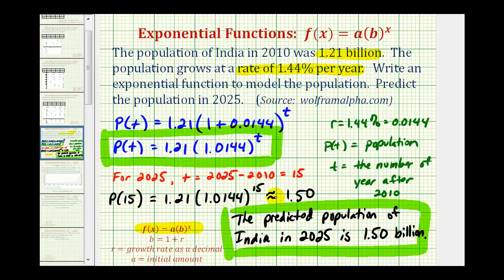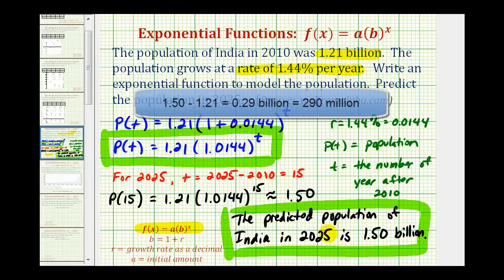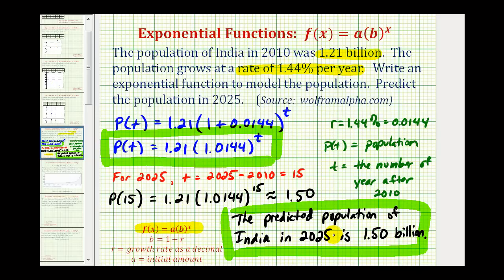To give you an idea what this means, in 2010 the population was 1.21 billion. So this model predicts the population to grow almost 300 million over this 15 year span. The population of the United States today is about 310 million. Which means according to this model, over this 15 year span, the population of India will increase about the same size that the United States is today.